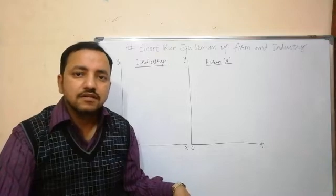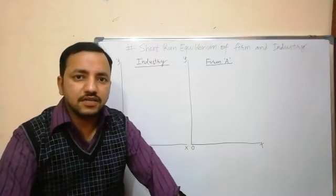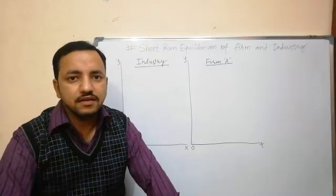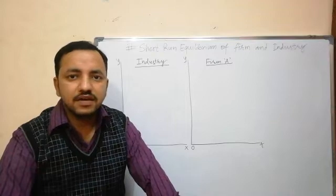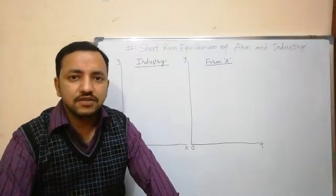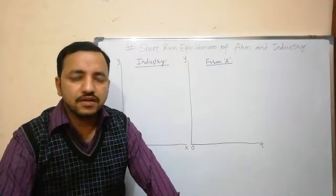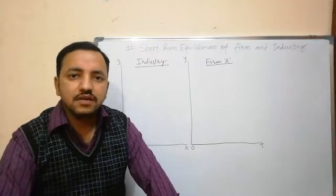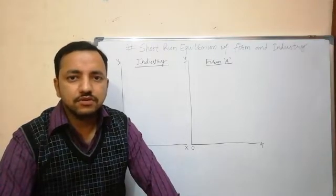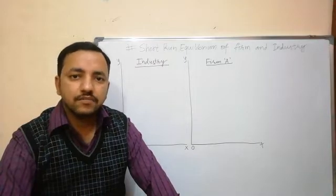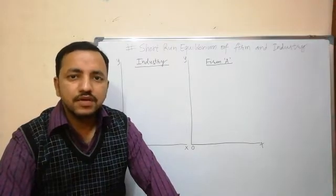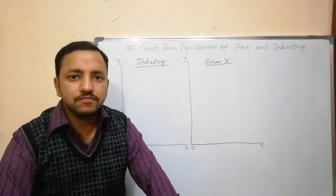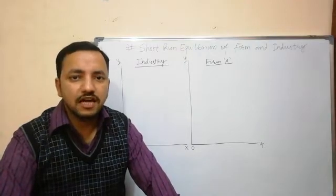The firm gets equilibrium when it satisfies two conditions: number one, marginal revenue should be equal to marginal cost; and number two, the marginal cost curve should cut the MR curve from below — meaning the slope of MC should be greater than the slope of MR.